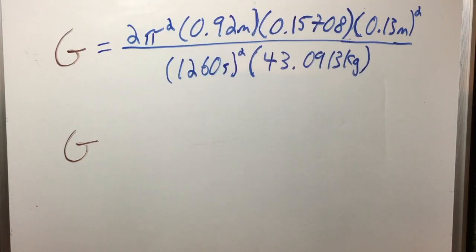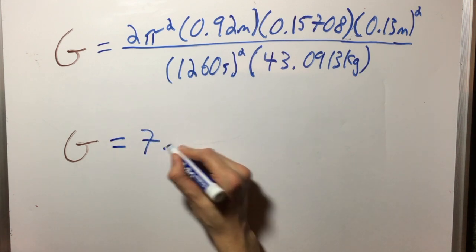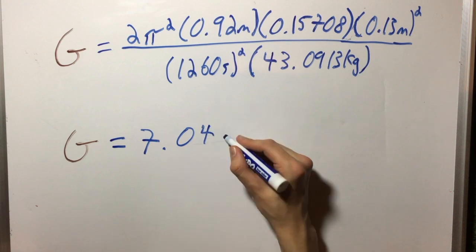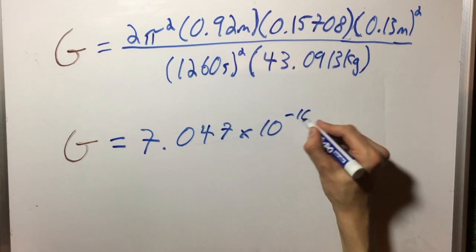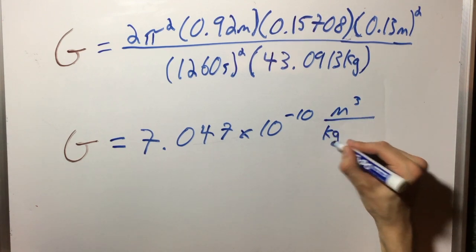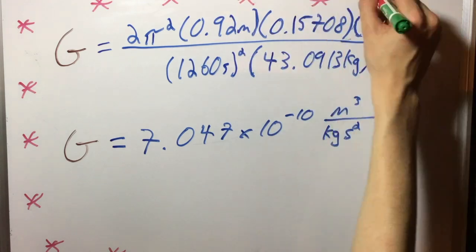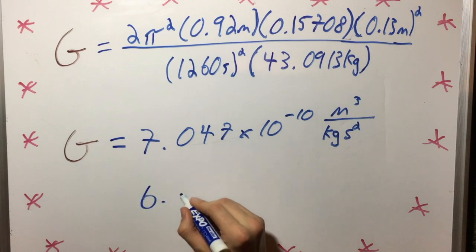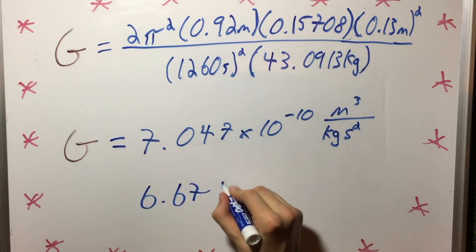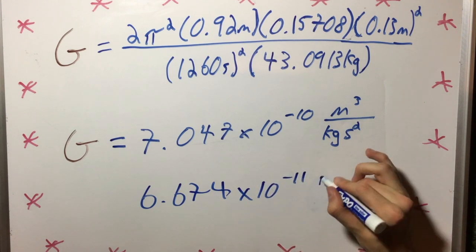When we plug our measurements into the gravitation equation, we get the messy equation that you see on the board. Simplified, this results in G is equal to 7.047 times 10 to the negative 10th meter cubed over kilogram second squared. Hooray! Right? Wait a second. The actual value of G is 6.674 times 10 to the negative 11th meter cubed over kilogram second squared. So why are we celebrating?